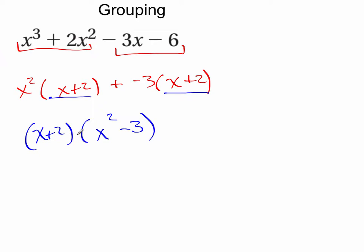Now I can continue factoring this over the irrationals, because this is technically a difference of squares. It's just that one of the squares is irrational.